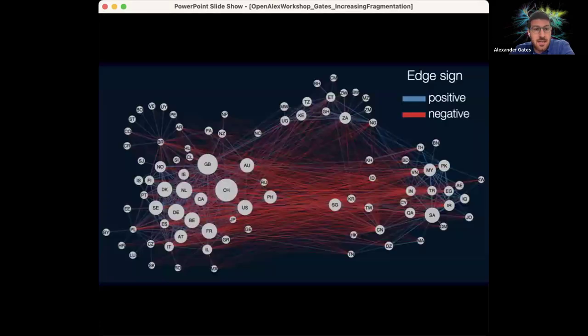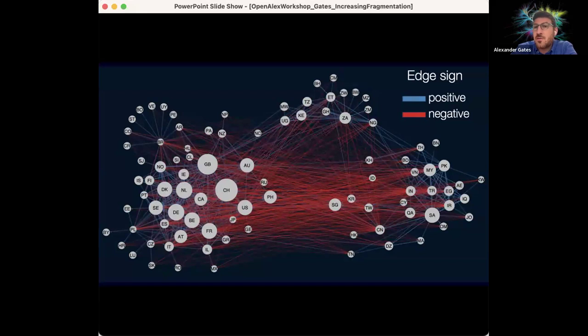Surprisingly, though, if we overlay the negative links on that, you find that most of the negative links are between those community structures. And so what that means is that we find a strong fragmentation where within a community, you're very supportive of each other's work and you tend to over-cite the work coming from other countries within that community. But between communities, you tend to under-cite that work and disvalue it.